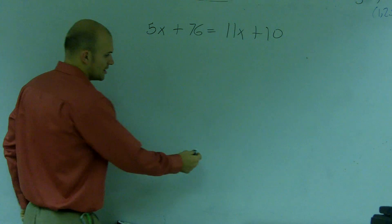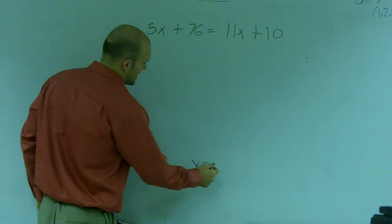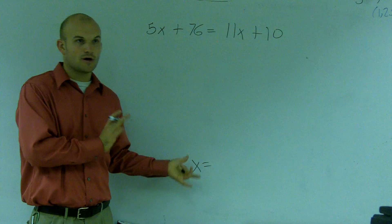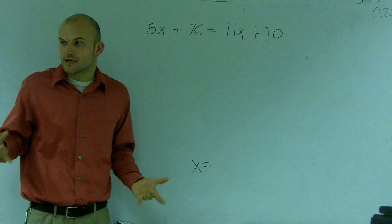And what I mean by get rid of is I want to put our variables on the same side. When we're trying to solve an equation, our ending answer, we want to have x equals, all right? Or if it was y or whatever. You always want to have your variable all by itself equaling something else.